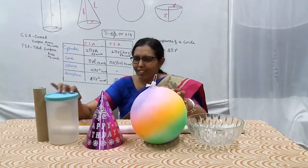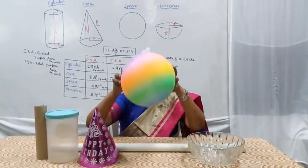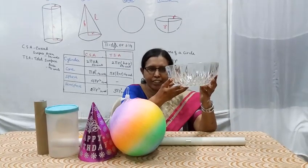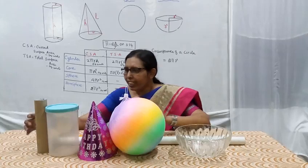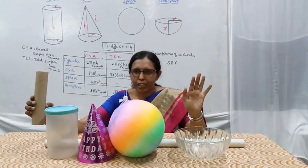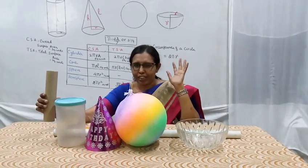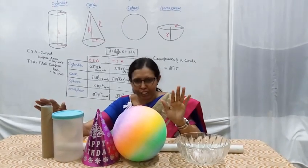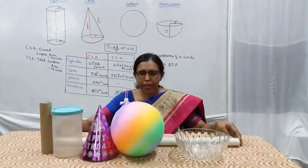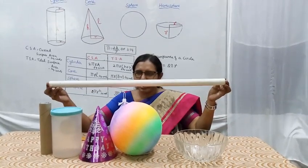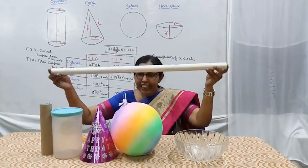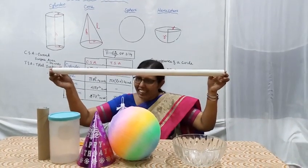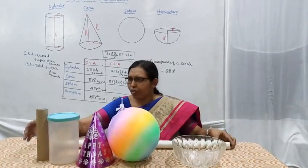We will cover cylinder, sphere, hemisphere, and their ratios. I will explain the derivation. For a cylinder, the radius and height are the key dimensions — the length of a cylindrical pipe is its height.